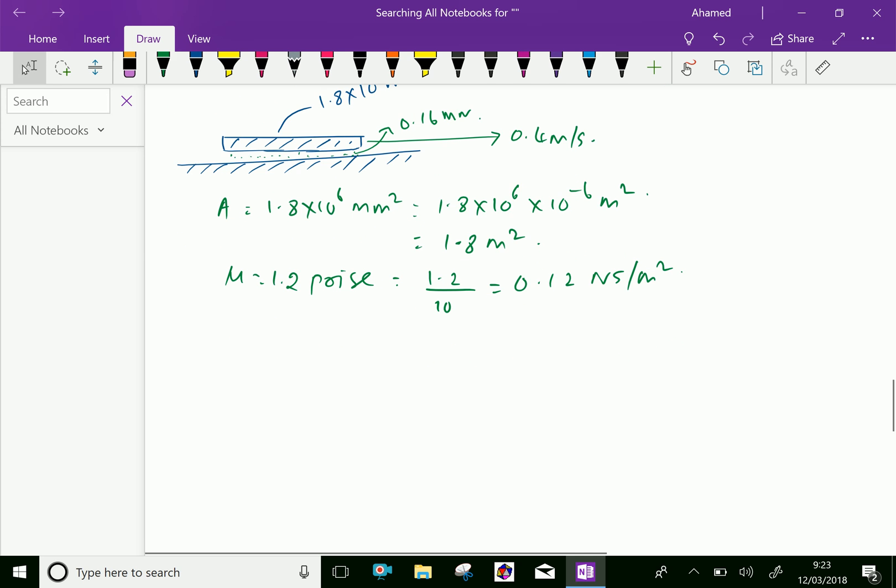Now, we know the equation shear stress equal mu du over dy. Here mu is given as 0.12 into du means velocity of the plate A equal 0.4 over dy. The thickness of the oil film is 0.16 mm. So you have to multiply by 10 to the power of minus 3 or you can write this as 0.00016 which is converted to meters.